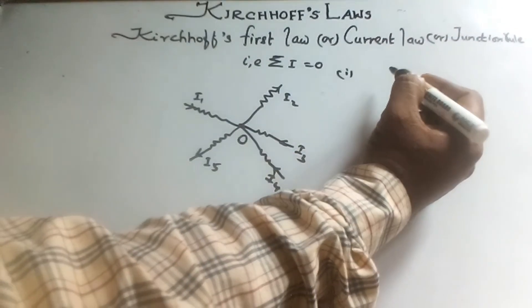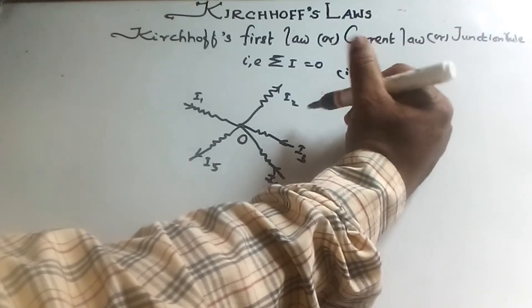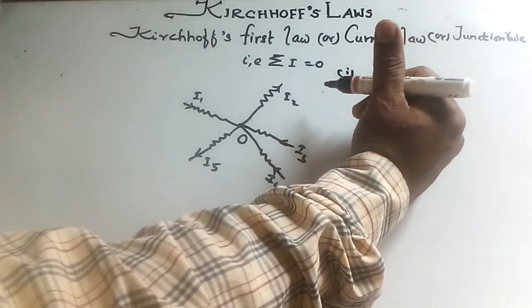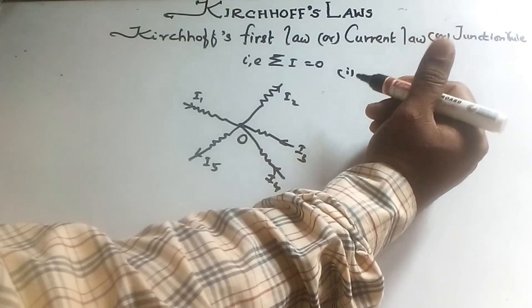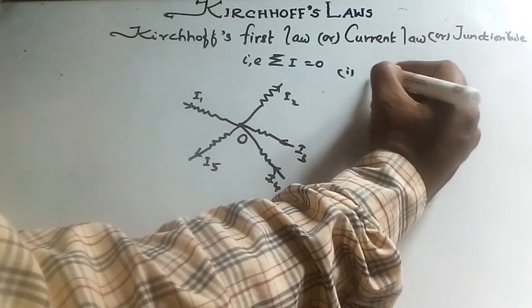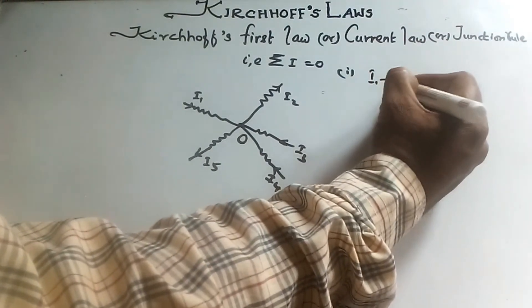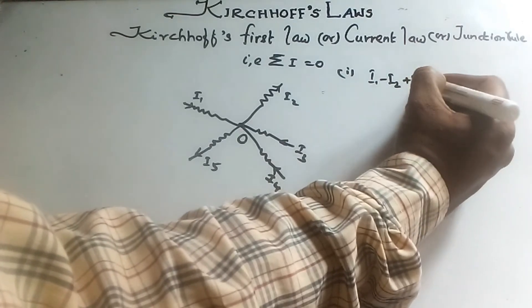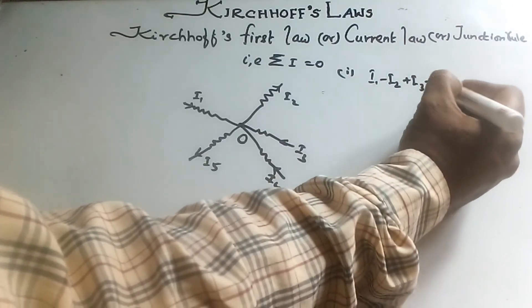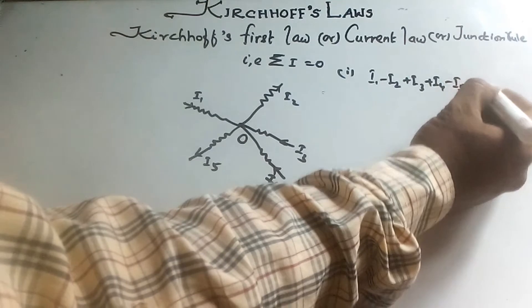The sum of currents flowing towards junction is equal to sum of currents leaving the junction. That is, I1 minus I2 plus I3 plus I4 minus I5 equal to zero.